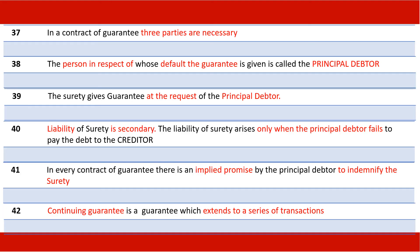Continuing guarantee is a guarantee which extends to a series of transactions. In a contract of guarantee, three parties are necessary. The person in respect of whose default the guarantee is given is called the principal debtor. The surety gives guarantee at the request of the principal debtor. Liability of surety is secondary. The liability of surety arises only when the principal debtor fails to pay the debt to the creditor. In every contract of guarantee, there is an implied promise by the principal debtor to indemnify the surety. Continuing guarantee is a guarantee which extends to a series of transactions.